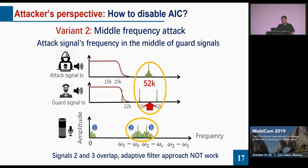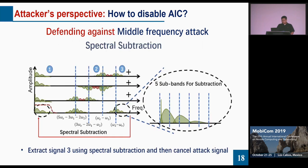The second variant is the middle frequency attack, where the attacker sets the attack signal frequency in the middle of the guard signals. In this case, the spectrum changes such that signal three and signal two overlap with each other, making the adaptive filter unable to work. To deal with this, we extract signal three using spectral subtraction and then cancel the attack signal.